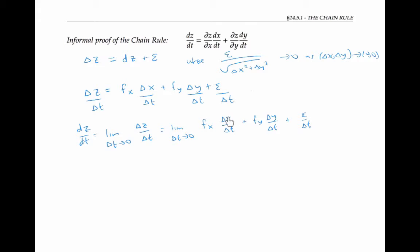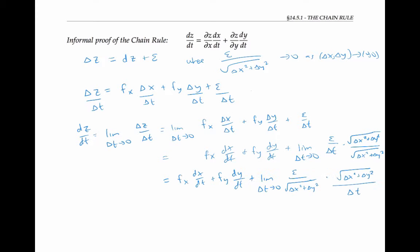Now the limit of delta x over delta t is just dx/dt. And the limit of delta y over delta t is dy/dt. So we're left with having to compute the limit as delta t goes to zero of epsilon over delta t. Since I know that epsilon over the square root of delta x squared plus delta y squared is going to be heading towards zero, I'm going to multiply the numerator and the denominator of this expression by delta x squared plus delta y squared. I'll rearrange my limit. And now I'll pull the delta t inside the square root sign.